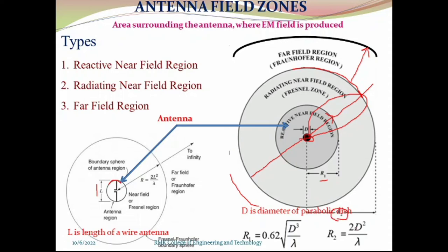R2 is equal to 2D² divided by lambda. This is the distance of R2, where D is the larger diameter or larger dimension of any antenna we have taken, and lambda is the operating wavelength. R1 is the shorter radius, that is 0.62 times root of D cubed by lambda. This is the R1 distance, that is of your reactive near field region, and R2 is the starting distance of the far field region.